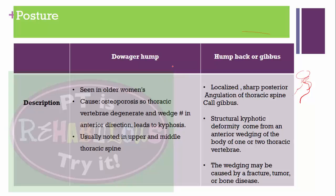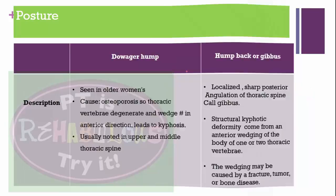In dowager's posture, the patient's head goes forward, and from the neck there is more angulation of the spine with decreased lumbar lordosis.